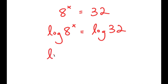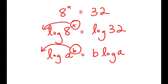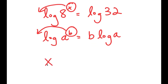Now, if I have something in the form log of a to the power of b, I can move this exponent b to the front of the logarithm. So log a to the power of b is equal to b times log a. In the case of log 8 to the power of x, we can think of x as b, so we can move x to the front. So I get x times log of 8 is equal to log of 32.